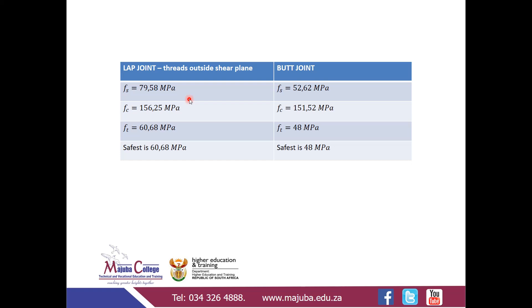To summarize: for the lap joint, shear stress was 79 MPa, compression stress was 156 MPa, and tearing stress was 60.68 MPa. All three stresses act simultaneously on the connection. The smallest value — tearing at 60.68 MPa — is actually the most critical because, under the same force, it experiences the most stress relative to its area, making tearing the weakest failure mode. The same comparison applies to the butt joint results. If you have any questions, please leave them in the comment section. Thank you.